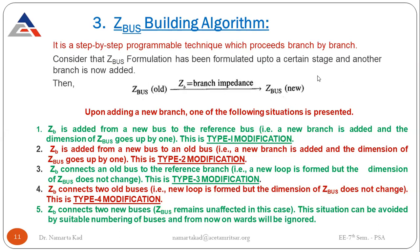Upon adding a new branch, one of the following situations is presented. There are four modification types. In type 1 modification, ZB is added from a new bus to the reference bus — a new branch is added and the dimension of Z bus goes up by one. In type 2 modification, ZB is added from a new bus to an old bus — again a new branch is added and the dimension of Z bus goes up by one.